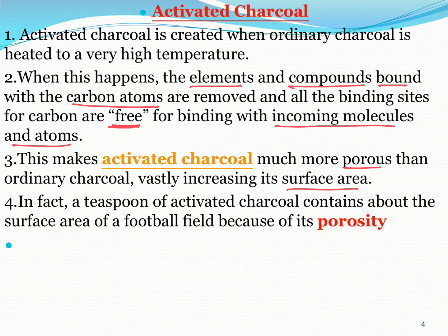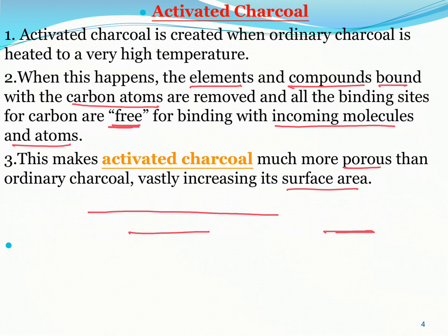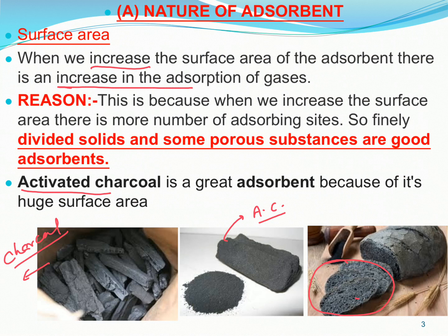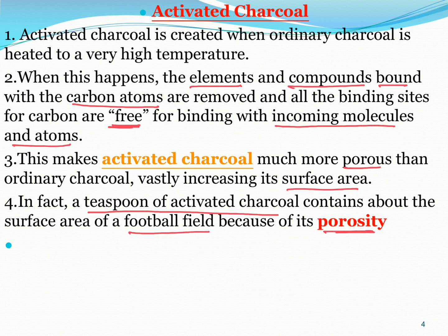Charcoal can be activated by heating at high temperature. A simple example: 80 spoons of activated charcoal contain a surface area equivalent to a football field — that's how much capacity it has for adsorption. This is due to its porosity: the porous nature creates holes on the surface. So, the nature of adsorbent — specifically surface area and porosity — is a very important factor affecting adsorption.